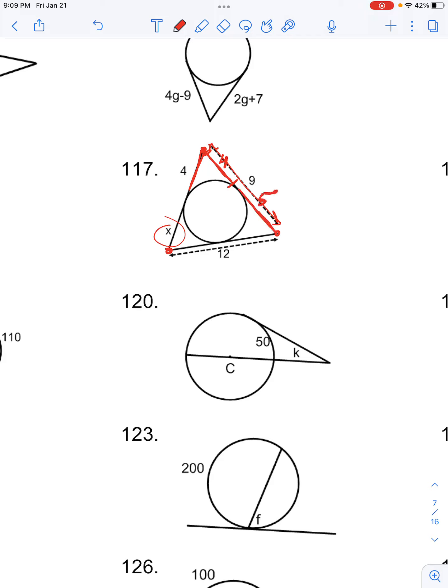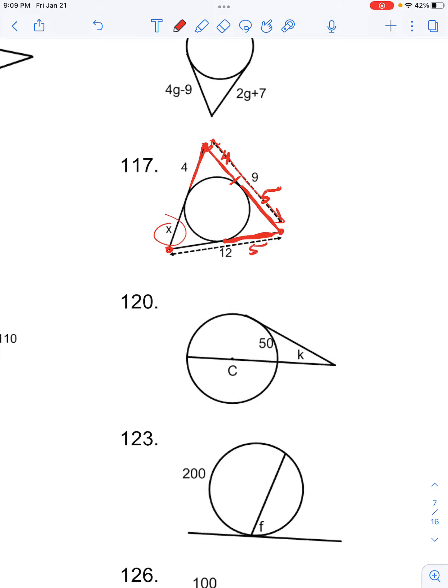So then if we know that this tangent line is congruent to this tangent line, and this one is equal to 5, then this one must also be equal to 5.